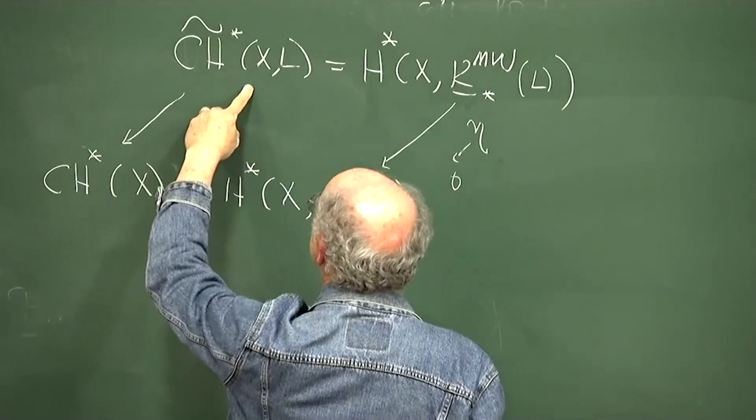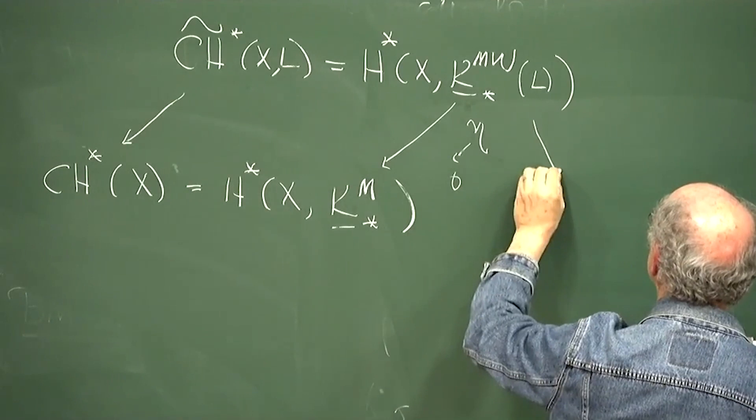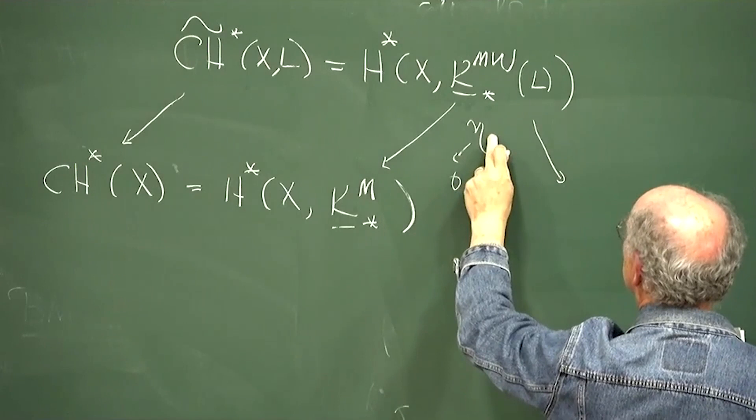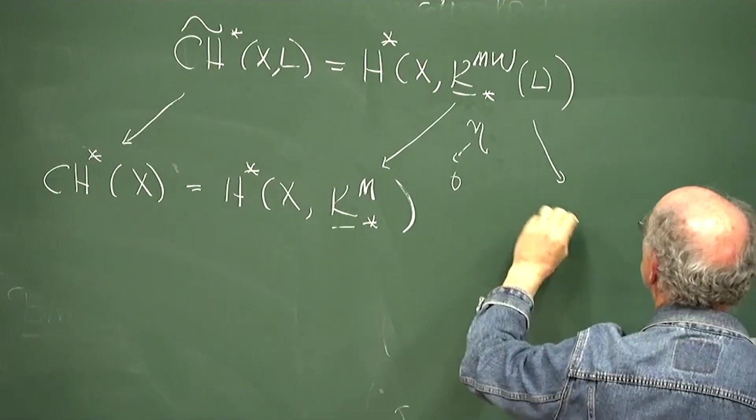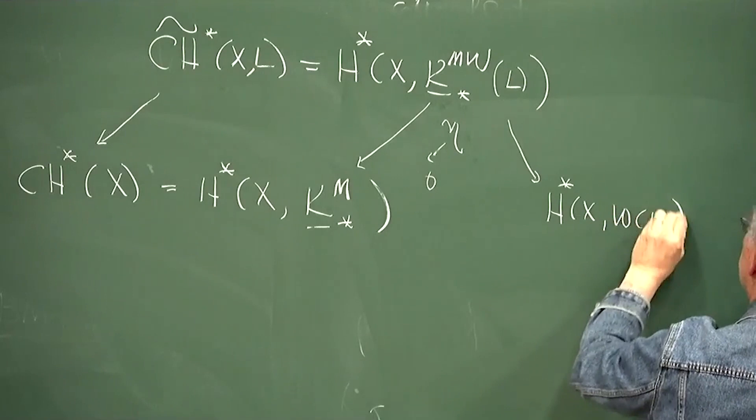On the other hand, if you invert eta, then everything ends up in negative degree — because eta has degree minus one — and in negative degree this is just the sheaf of Witt groups. So this maps to the cohomology in the Witt sheaf, giving us this diagram.